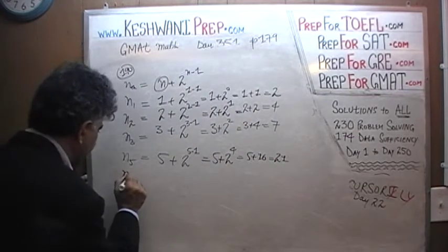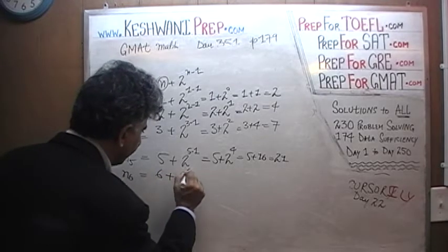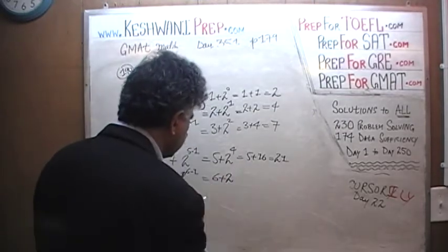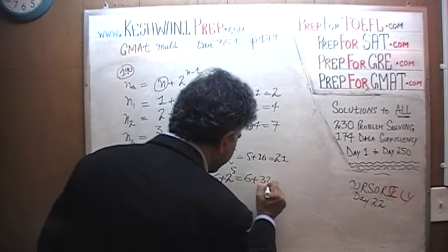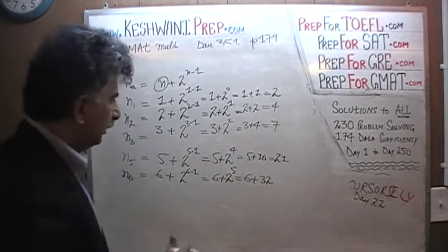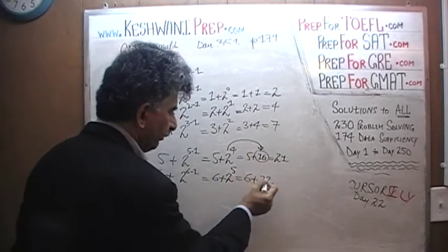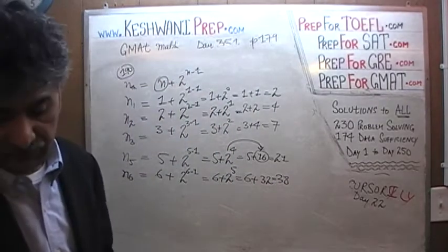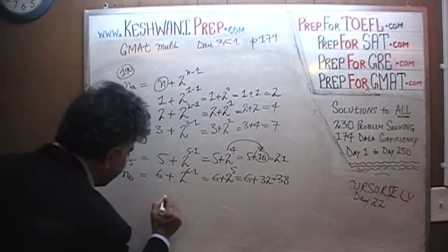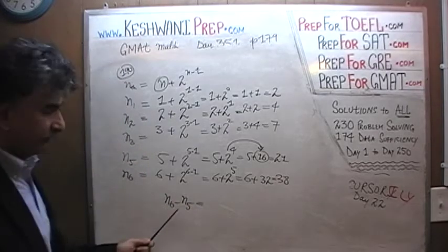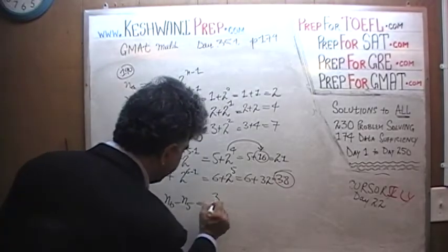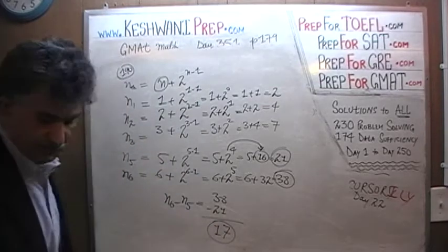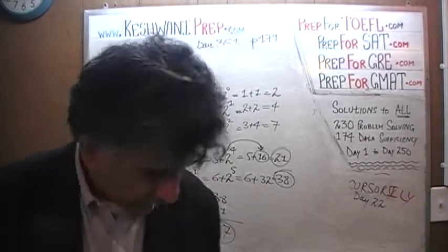The sixth term is going to be 6 plus 2 raised to 6 minus 1, giving us 6 plus 2 raised to 5. Since 2 raised to 4 was 16, 2 raised to 5 would be twice as much, so we end up with 6 plus 32, which is 38. The question was simply asking for the difference between the sixth term and the fifth term. So 38 minus 21 gives us 17, and the answer is 17, which is letter E.